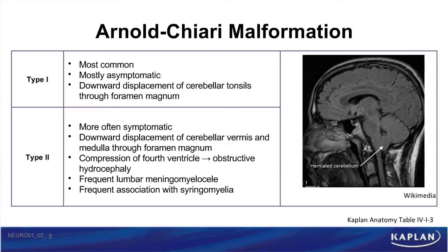The next congenital malformation of the nervous system is the Arnold-Chiari malformation, of which there are two types. Type 1 is the most common and is associated with a downward displacement of the cerebellar tonsils through the foramen magnum. This type is mostly asymptomatic. Type 2, on the other hand, is commonly symptomatic.